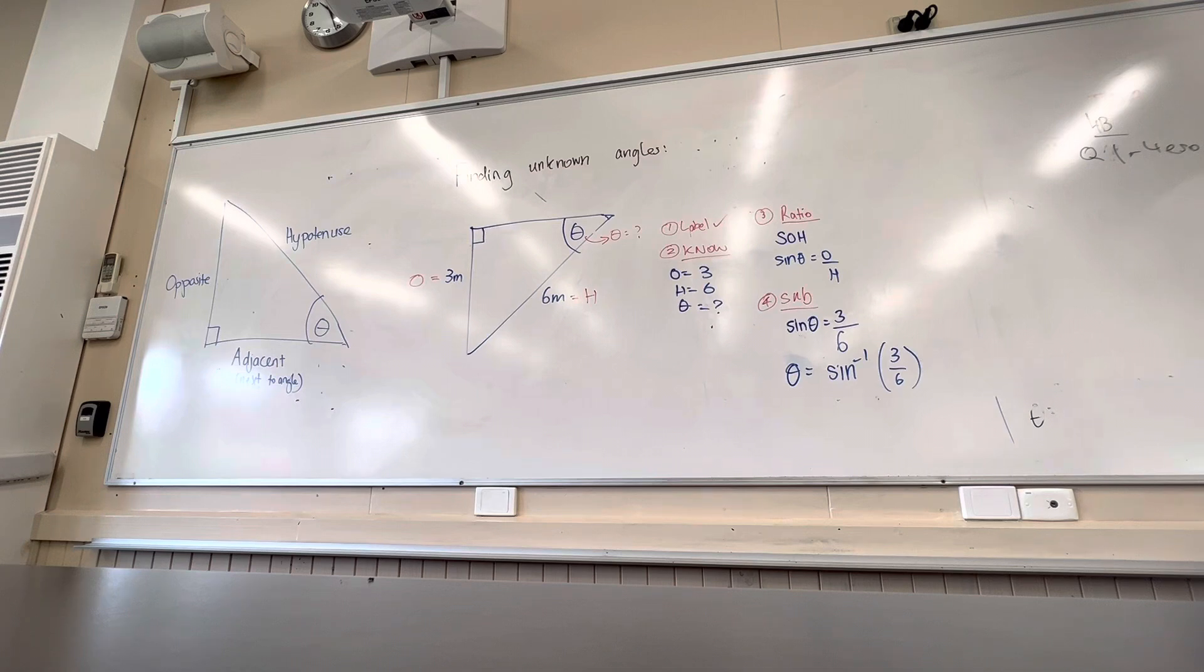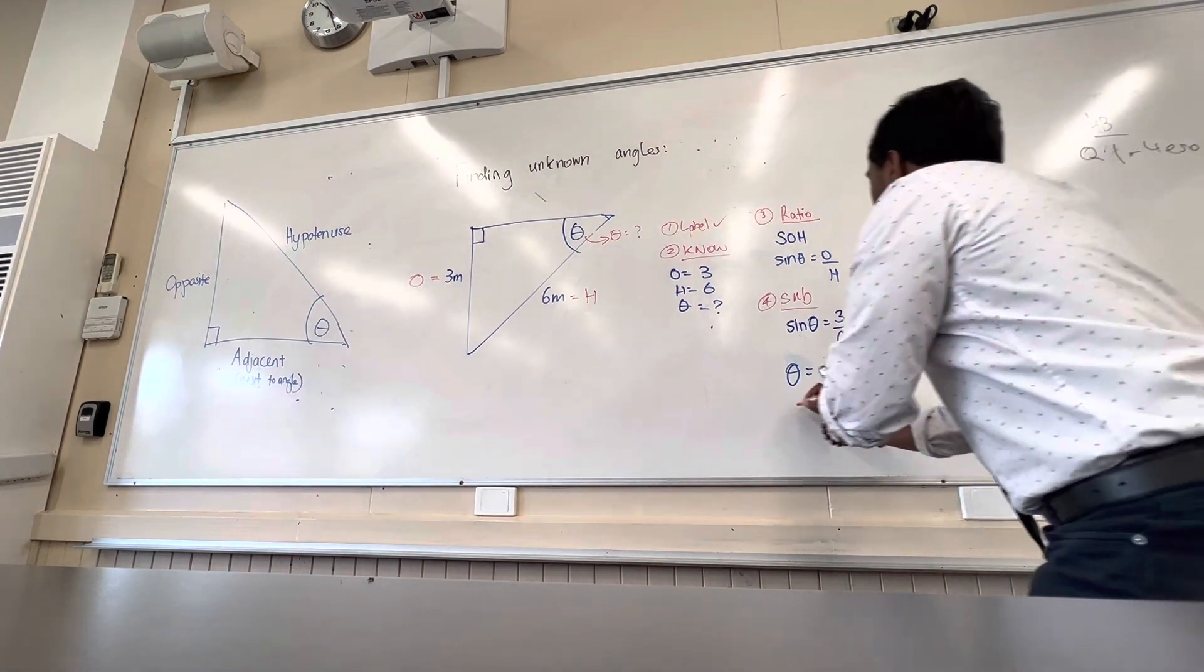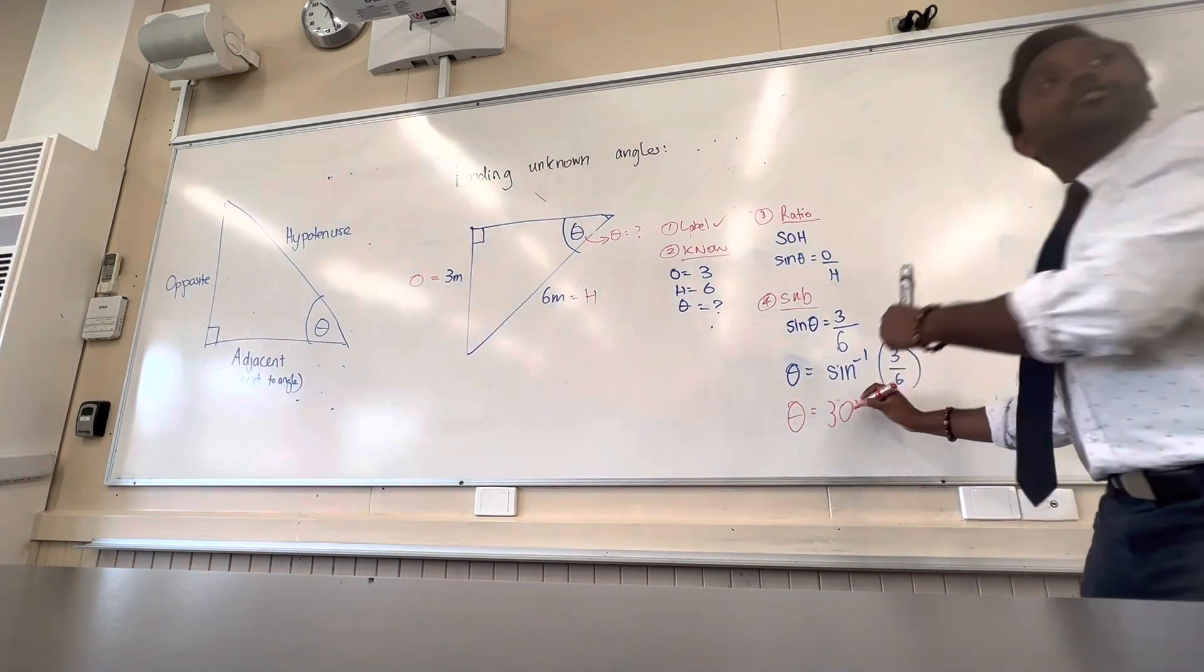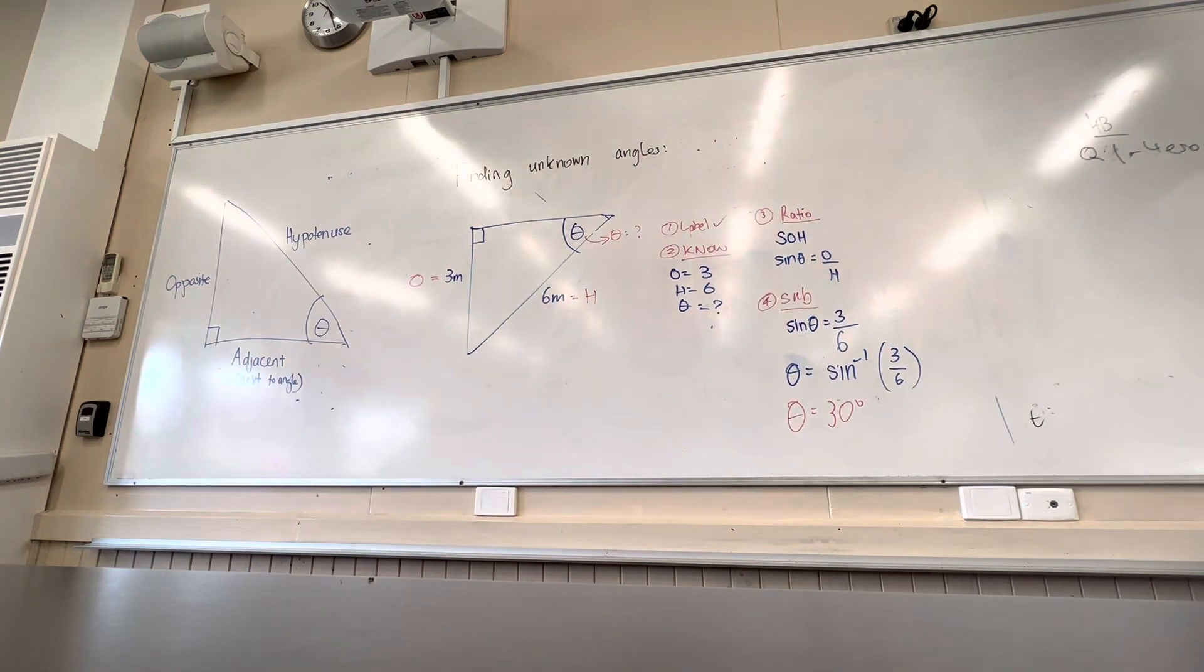Can someone figure out what that is? Sine inverse three over six. Arjun, do you have your calculator there? No. Yeah, 30. Okay, great. Theta equals to, Arjun, so theta equals to 30. What does that even mean to you, theta equals to 30? What are we doing here? What does that mean? Let's go back to what we're doing. What's this whole topic about?